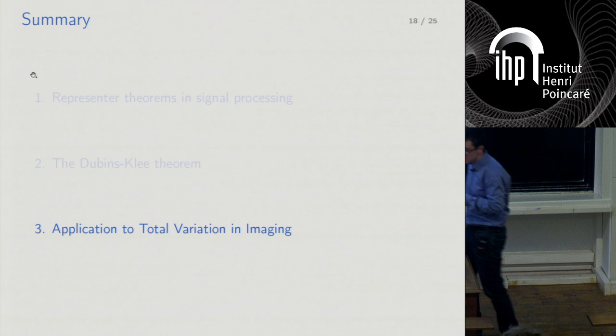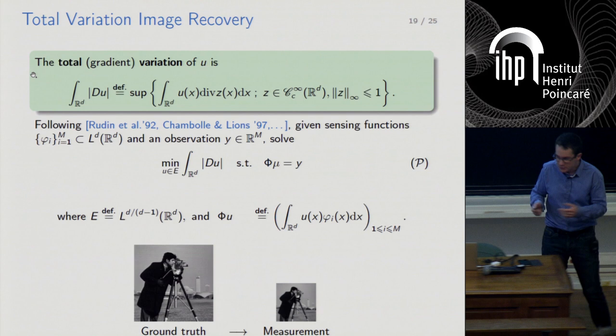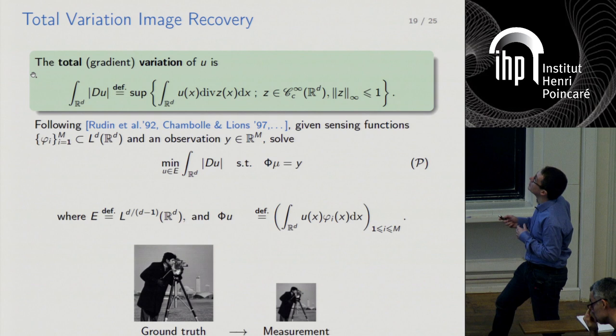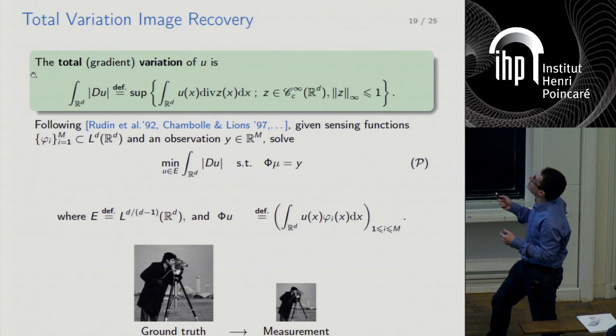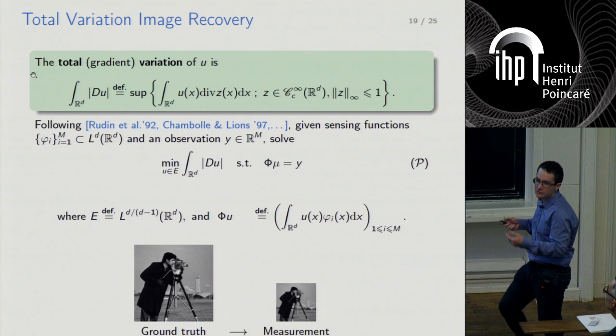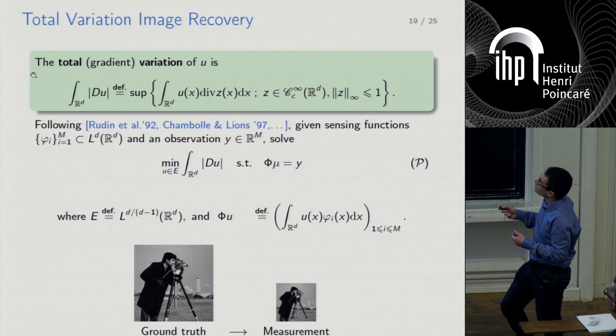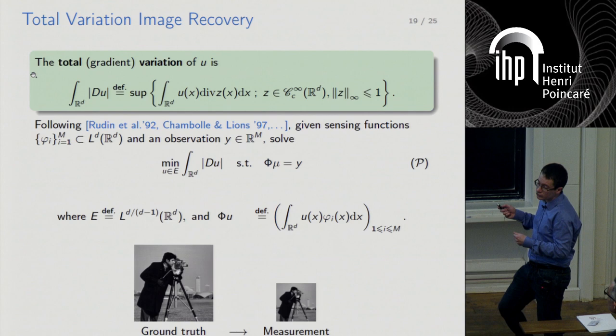Now let's look at total variation imaging — the total variation of the gradient. It's defined by duality by the formula used in this workshop, and it has been used for many years since the work by Rudin, Osher, and Fatemi. We have a sensing operator phi defined by integrating the function u against some functions phi_i, and we look for the function with least total variation explaining those measurements — for instance, you have an ideal image, blur it, and sample to get M measurements.